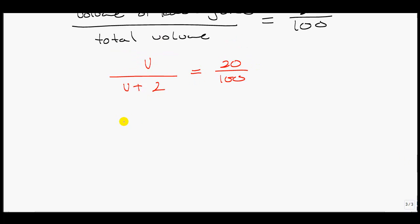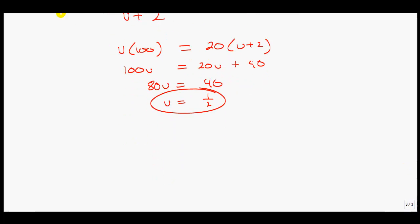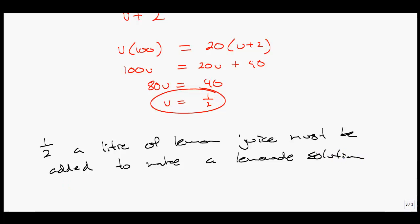Since I have a over b equals c over d, I'm going to cross-multiply. I get v times 100 equals 20 onto v plus 2. This gives me 100v equals 20v plus 40. Gathering like terms, I have 80v equals 40. Dividing by 80, we get v equals 1 half. That means 1 half a liter of lemon juice must be added to make a lemonade solution that contains 20% lemon juice.